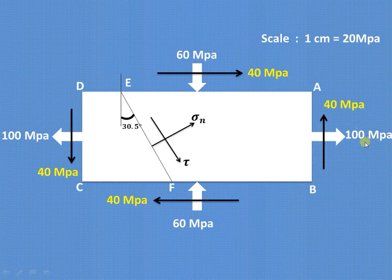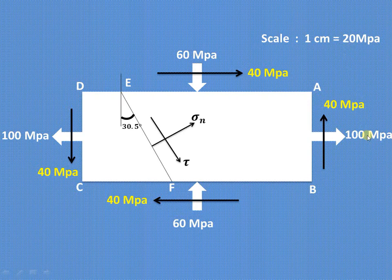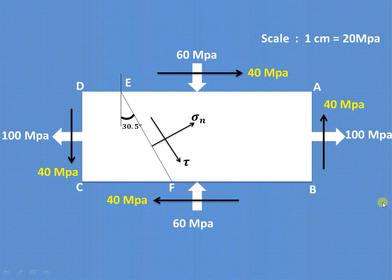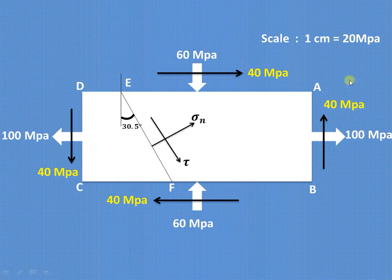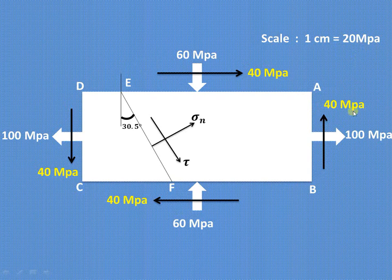If we choose a scale of 1 cm = 20 MPa, then 100 ÷ 20 = 5 cm, and 40 ÷ 20 = 2. So for plane AB, we can plot a point with coordinates (5, −2): 5 for the tensile stress (positive) and −2 for the complementary shear stress (negative, anti-clockwise moment). So (5, −2) will be our first point.